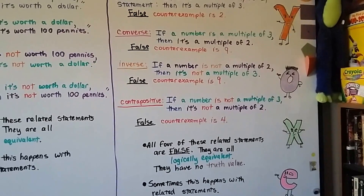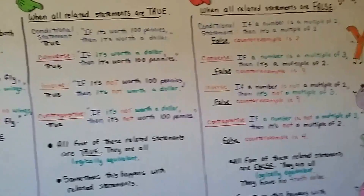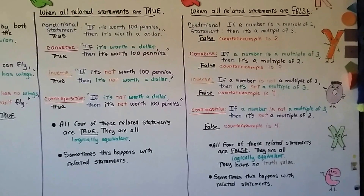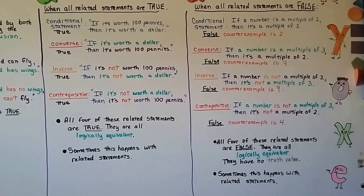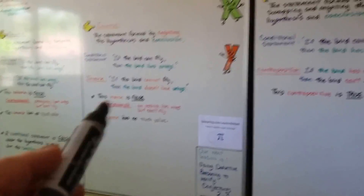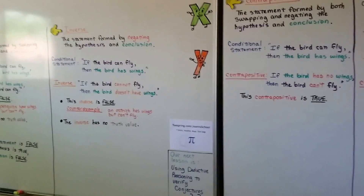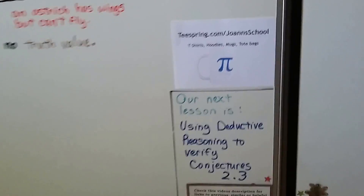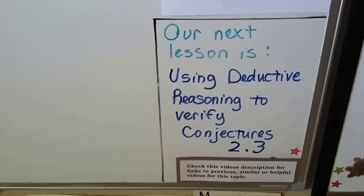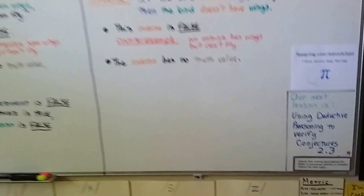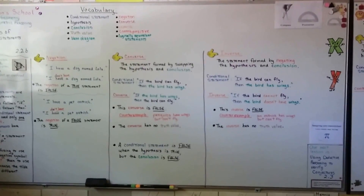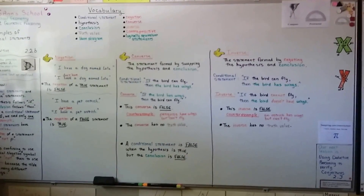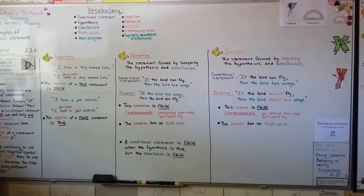Sometimes all four related statements can be true, or all four can be false. And sometimes the conditional and the contrapositive are true while the converse and the inverse are false, like with those bird examples. Our next lesson is using deductive reasoning to verify conjectures, Lesson 2.3. I hope this cleared up any confusion from the previous video and you now understand all these terms. I'm proud of you — keep trying, and I'll see you next time. Bye.